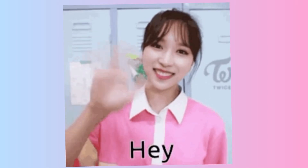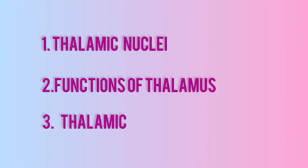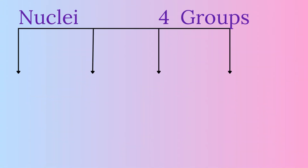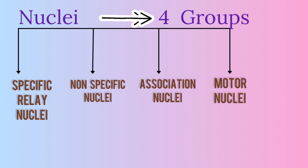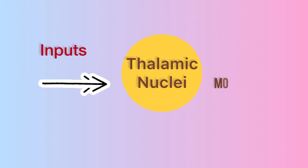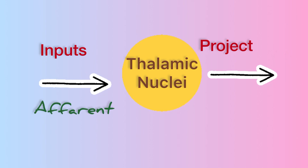Today we are going to study the thalamus: thalamic nuclei, functions, and thalamic syndrome. The nuclei are divided into four groups: specific relay nuclei, non-specific nuclei, association nuclei, and motan nuclei. We will study where inputs come from and then where they project.